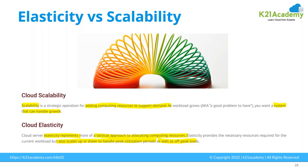Elasticity is more of a tactical approach to allocating computing resources. Elasticity provides the necessary resources required for current workloads but also scales up and down based on utilization. If your application needs more resources, you should be able to add those resources on the fly without bringing down the application — elastically adding resources without downtime. That is the core difference between elasticity and scalability.